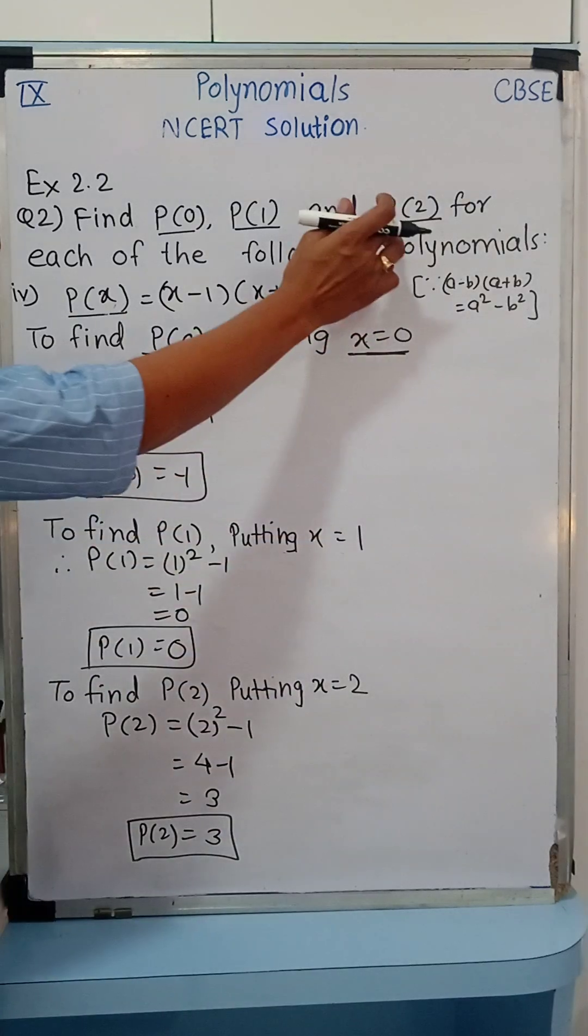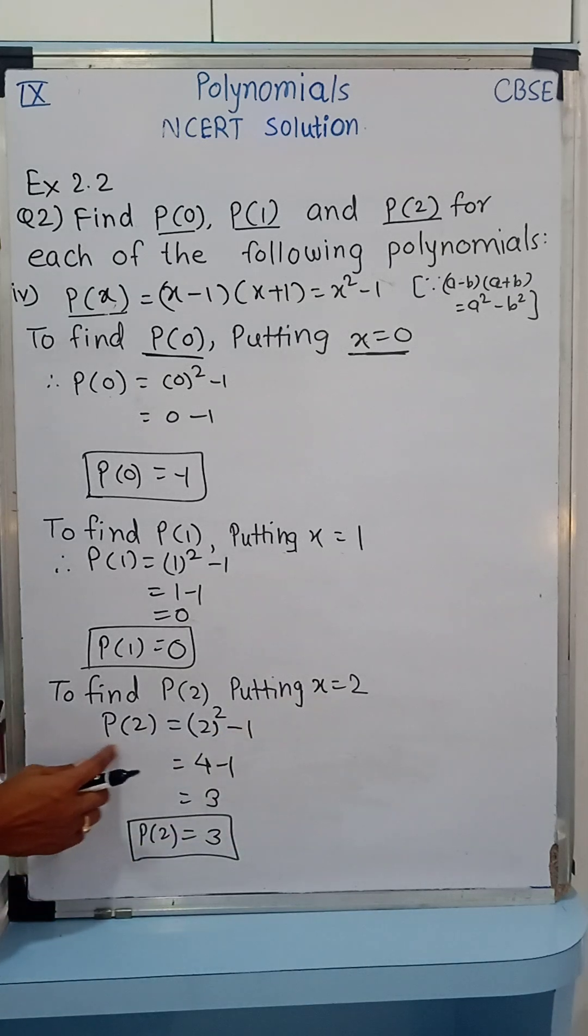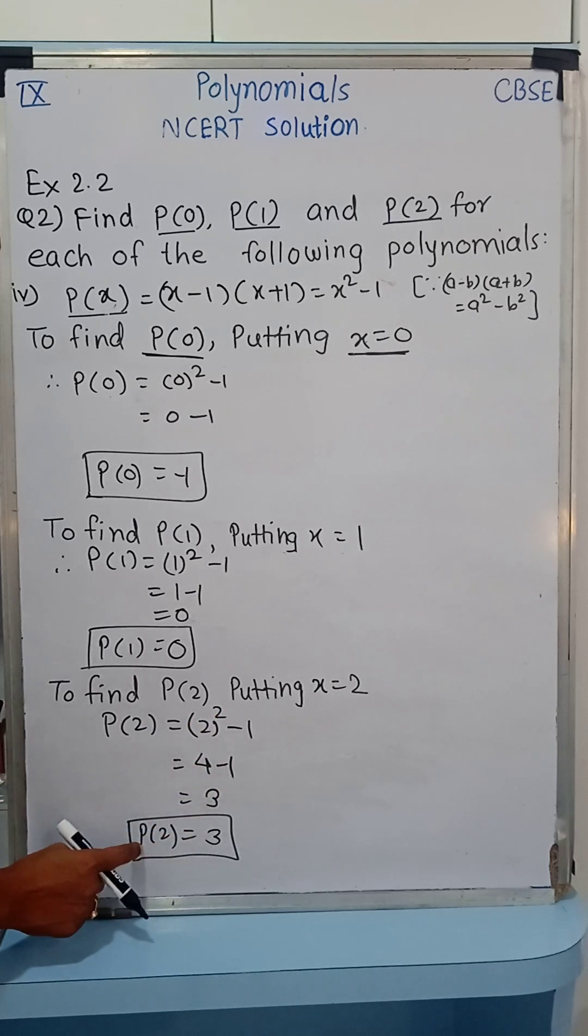Quickly look at value of P(2), wherever it is x, we just replace x by 2. So P(2) is equal to 2 squared minus 1. So as per the BODMAS rule, 2 squared is 4 minus 1, that is 3 and therefore P(2) is equal to 3.